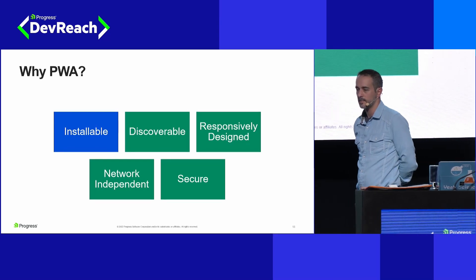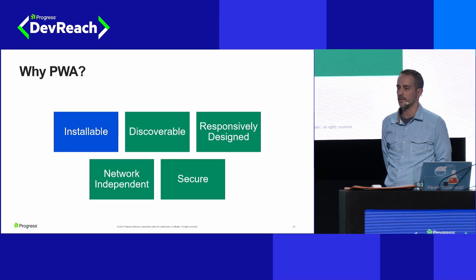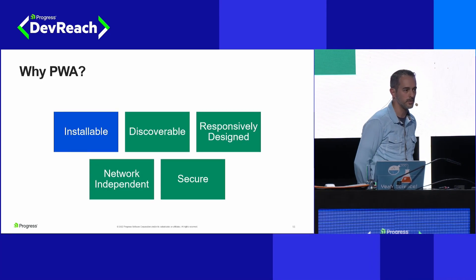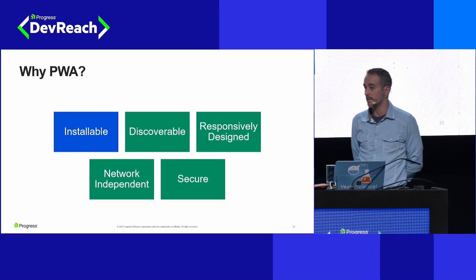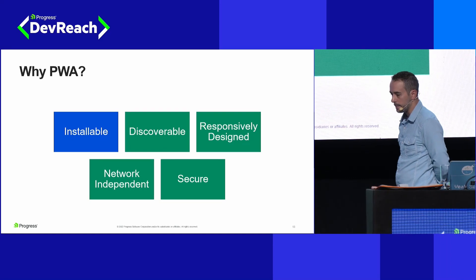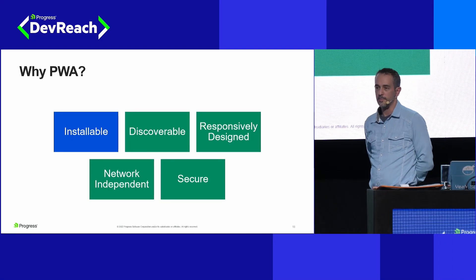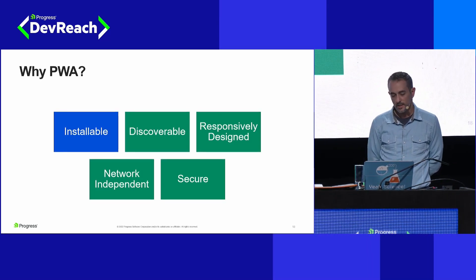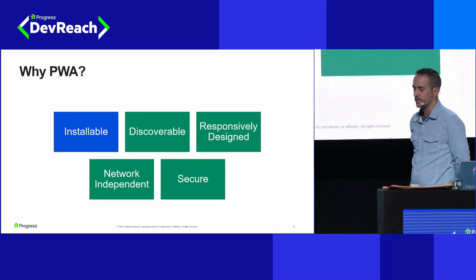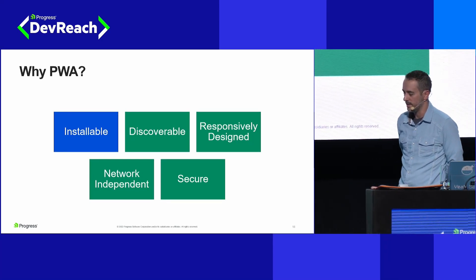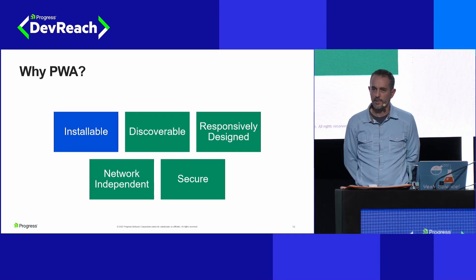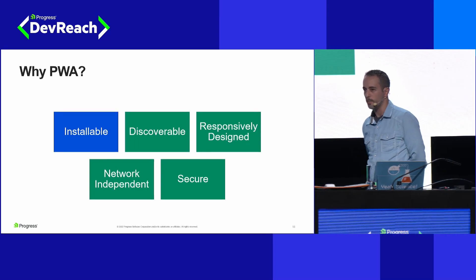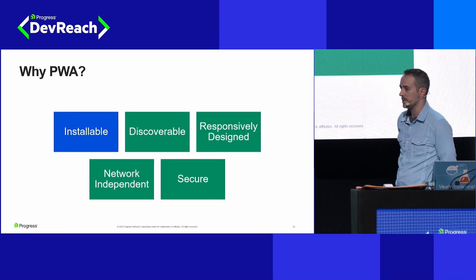PWAs give us an installable application. Since it's installable, we can actually submit it to some app stores, making it discoverable. We need to use responsive web design, so we carry over what we just learned. They need to be network independent — they have to have support in offline mode. And they need to be secure, sitting behind HTTPS.